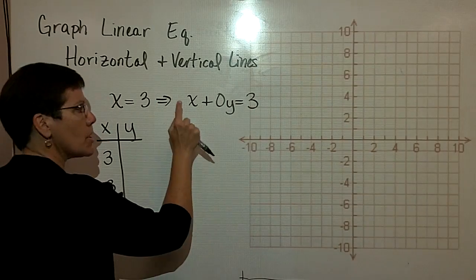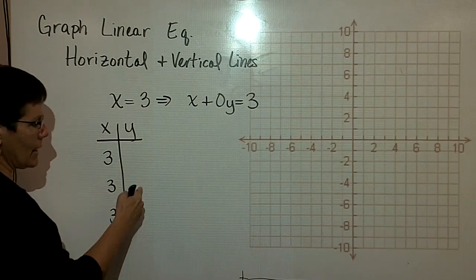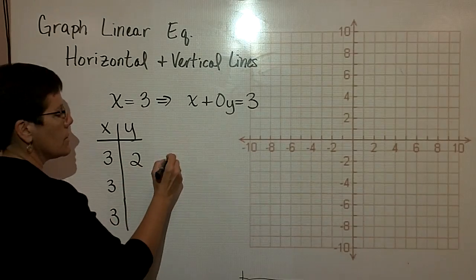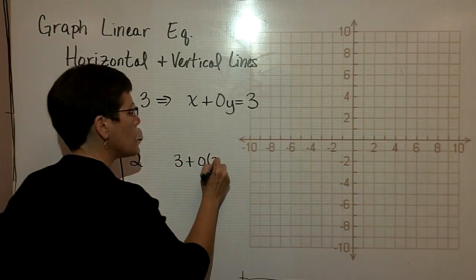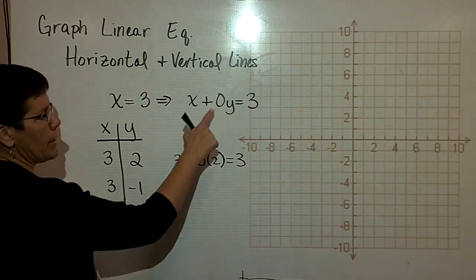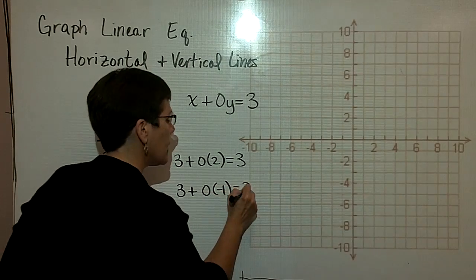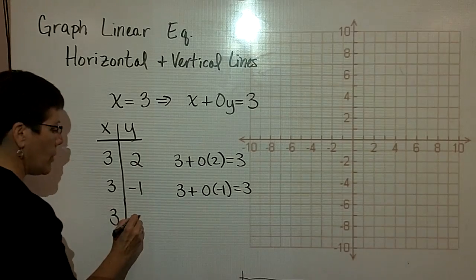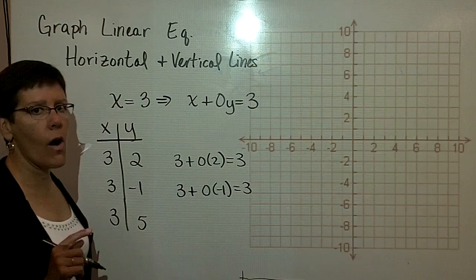So this statement is still just x equals 3. You can put anything in for y into these equations. I can put a 2 in because 3 plus 0 times 2 is still 3. Or I can put a negative 1 in for y, because 3 plus 0 times negative 1 is still 3. And I can put a 5 in for y. It doesn't matter. x always has to be equal to 3.